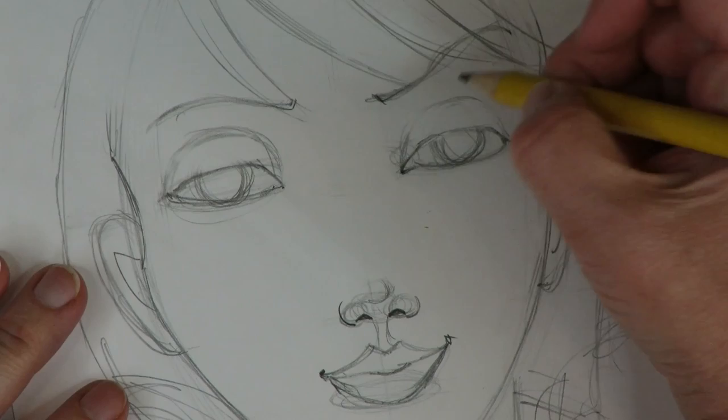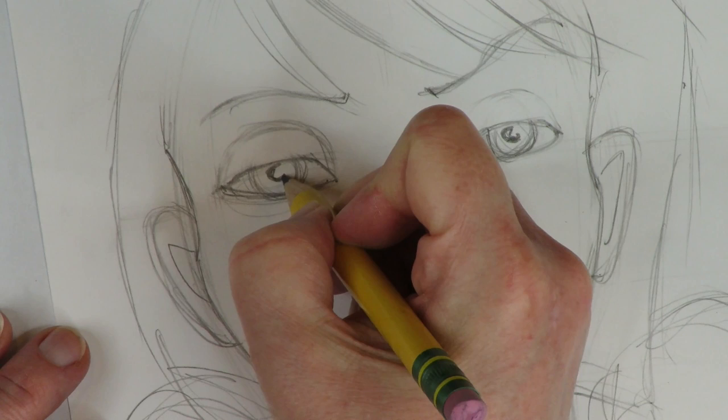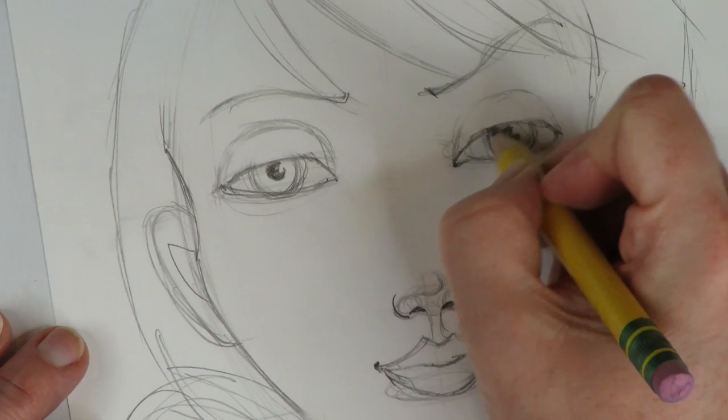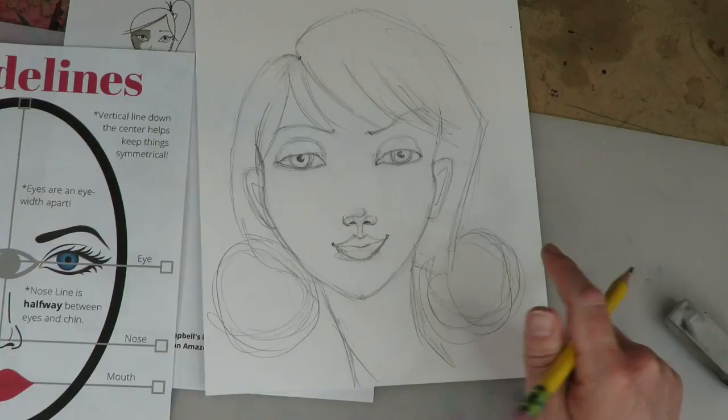And then what we're going to do is we're going to give her some pupils - that would be nice so she can see a little bit. I'm just kind of scrumbling in, totally weird I think.